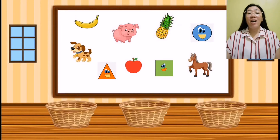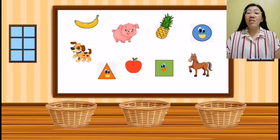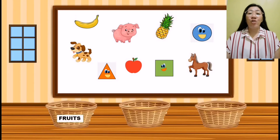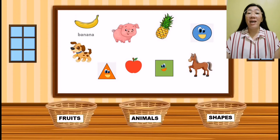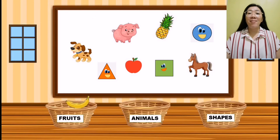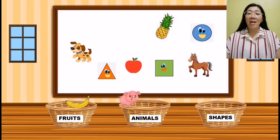Now class, let's have an activity. I have here different kinds of pictures. I want you to help me put these pictures into the basket according to their category. The first basket is for the fruits, the second basket is for the animals, and the third basket is for the shapes. Our first picture is a banana, and banana is a fruit, so we will put the banana inside the fruit basket. Our second picture is a pig, so the pig is an animal and we will put the pig inside the animal's basket.